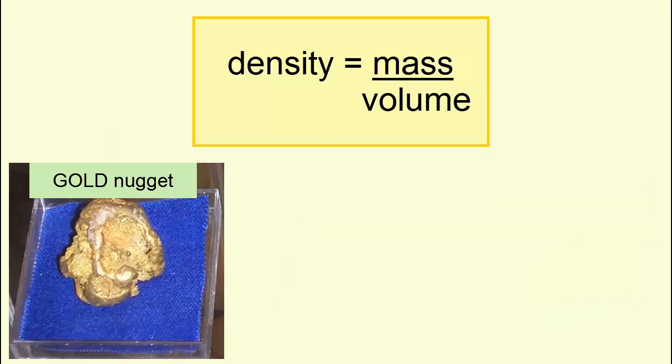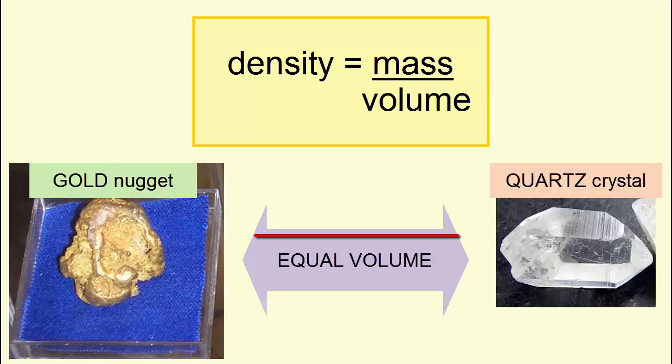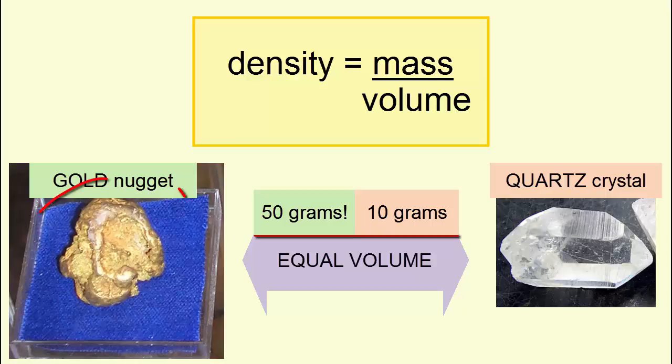For example, here's a gold nugget that is the same volume as this quartz crystal. Which is densest? Because the gold nugget is almost five times more massive for the same volume, it's denser.